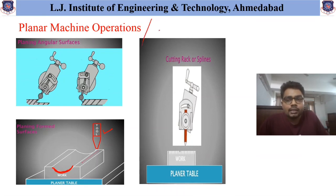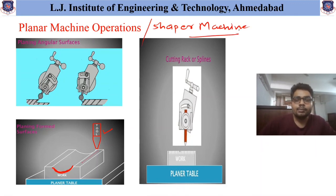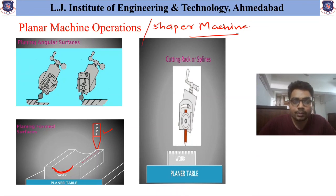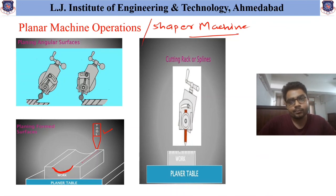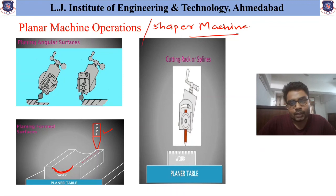The operations in the Planner Machine are similar to those of the Shaper Machine, but the key difference is that in the Planner Machine the workpiece or table is given reciprocating movement, whereas in the Shaper Machine the tool is given reciprocating movement. Other methodology is similar in both machines. I hope it is clear how these different operations are performed. Looking forward to seeing you all in the next lecture. Thank you.